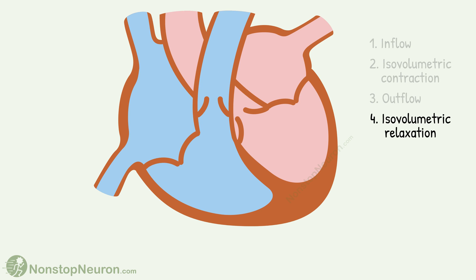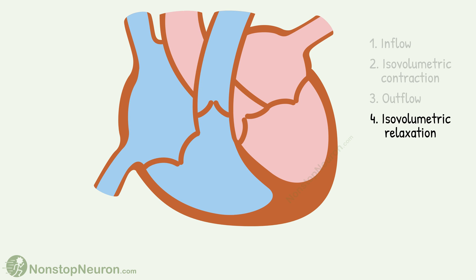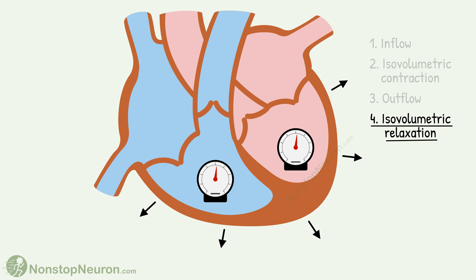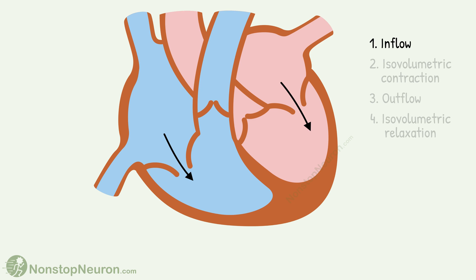Phase 4 is isovolumetric relaxation. The ventricles start to dilate during this phase. Late in the ejection phase, blood flow across the semilunar valves gets slower and eventually the blood tends to flow back, causing closure of the semilunar valves. So again all valves are in the closed position. Ventricles relax as closed chambers for a brief period, causing the pressure in the ventricles to fall, but there is no flow of blood as all valves are closed — so the volume remains the same, hence this phase is called isovolumetric relaxation. Eventually, the pressure in the ventricles falls below that in the atria, the atrioventricular valves open, and the next cycle begins with the filling of the ventricles.